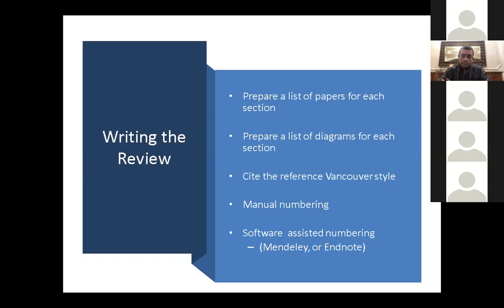If you take part of the text — a paragraph or a section — and add references, the software will do automatic numbering for you. This is very important because if you later change things and move sections around, software-assisted numbering such as Mendeley will remove all this hassle of renumbering manually.